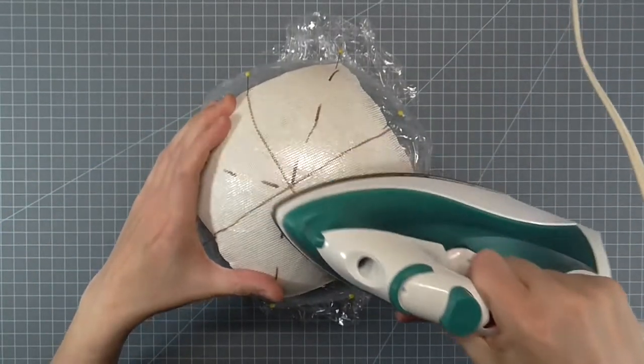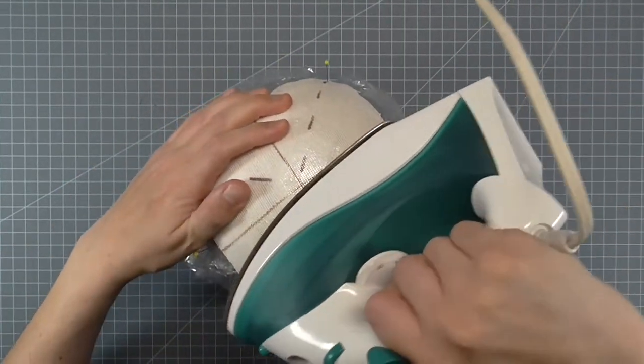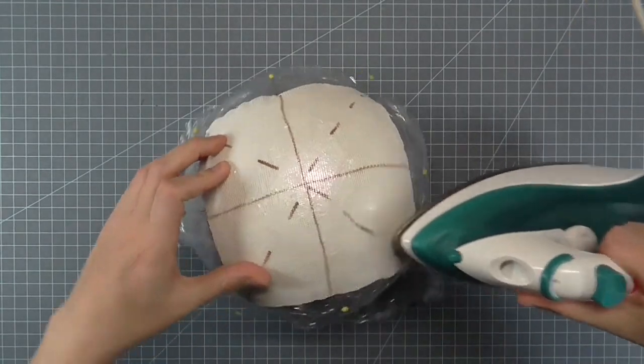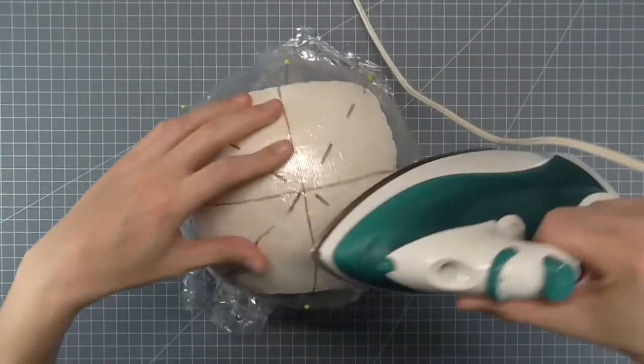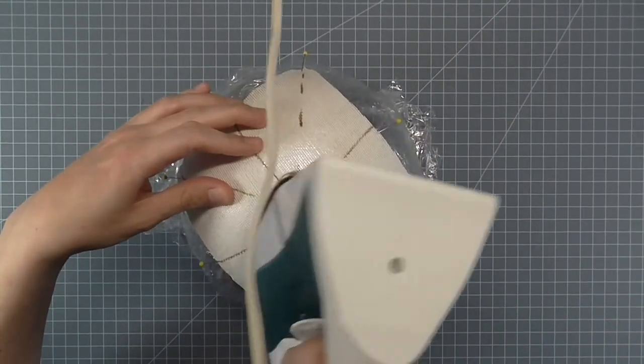With a dry iron on the cotton or wool setting, lightly press the Buckram over the ball. Keep the iron moving or you will melt the foam. This step helps dry the Buckram and smooth out the Buckram's texture. After this step, let the Buckram dry on the ball for about 15 to 20 minutes.